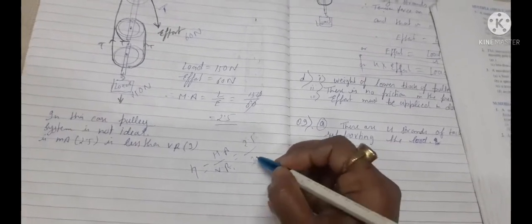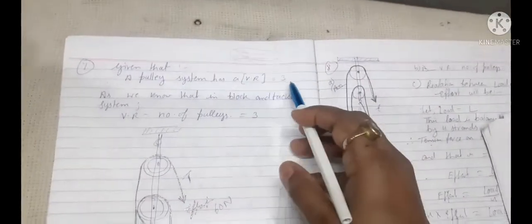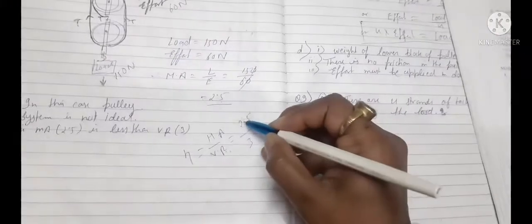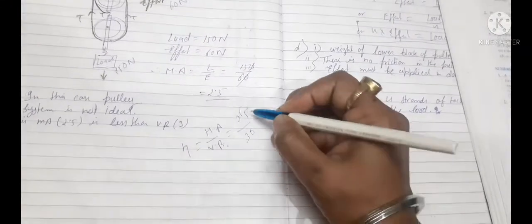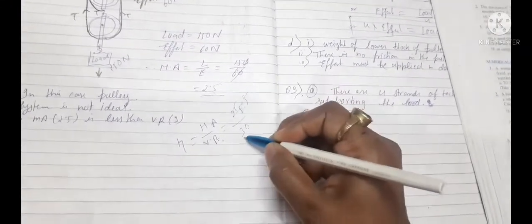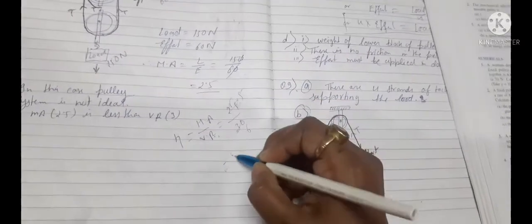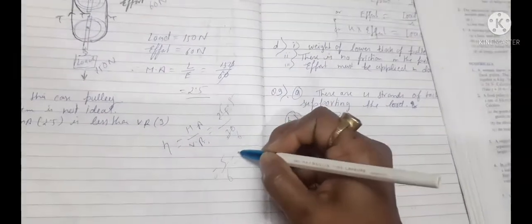Here MA is 2.5 and VR is 3, which is already given at the starting of the question. So what we are going to get as a value? 5 by 6.